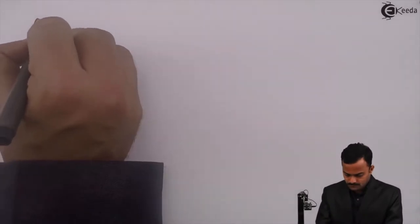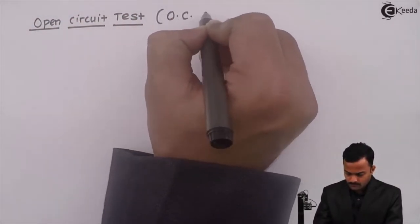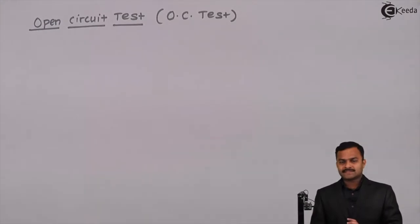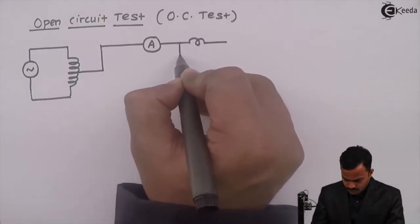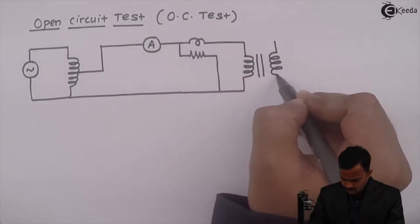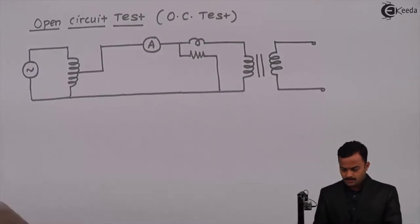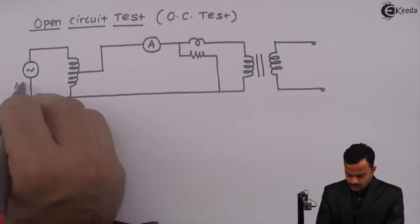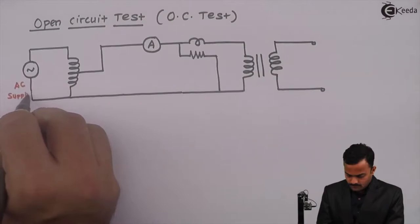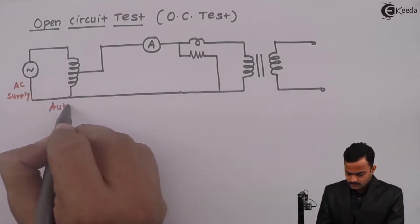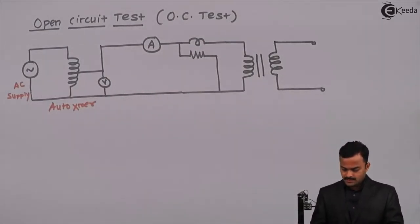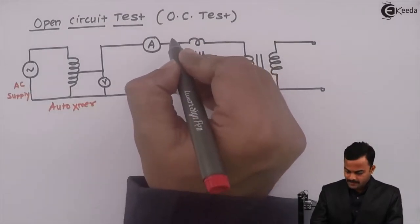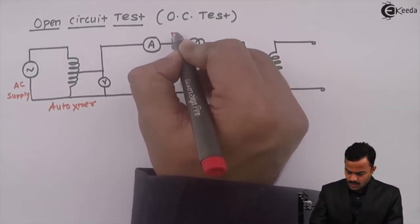Let's discuss the open circuit test first. I will draw the setup. Here we have an AC supply, an auto transformer, a voltmeter, an ammeter, and a wattmeter.